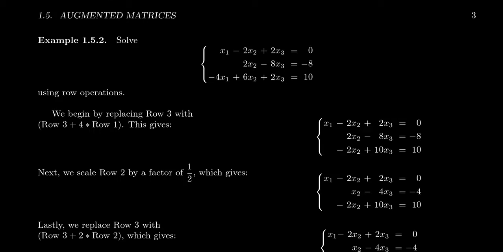Consider the following 3x3 system. It has three equations, three rows. It has three variables, three columns. Again, I'm getting a little ahead of myself here. So, in this linear system, we have the first equation, x1 minus 2x2 plus 2x3 equals zero. The second equation is 2x2 minus 8x3 equals negative 8. And the last one is negative 4x1 plus 6x2 plus 2x3 equals 10.